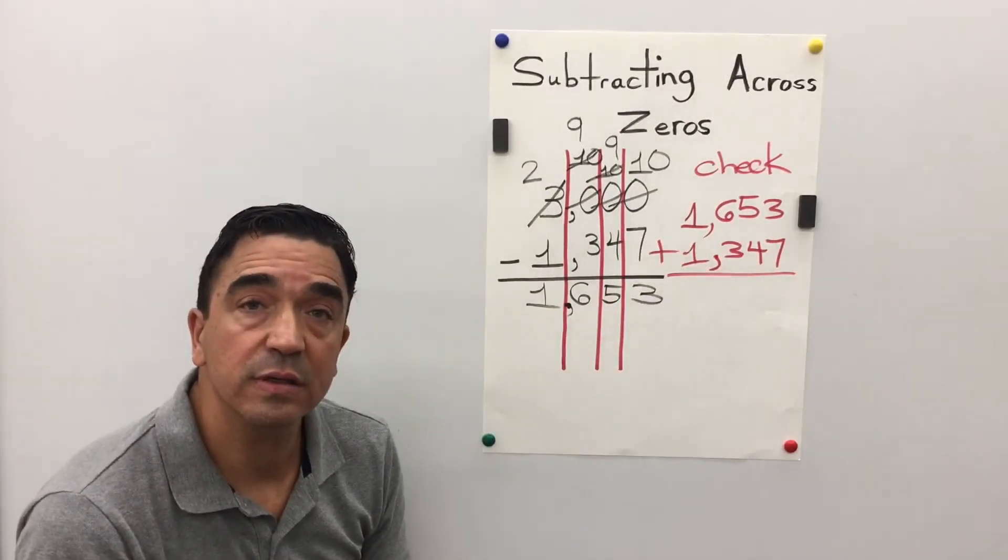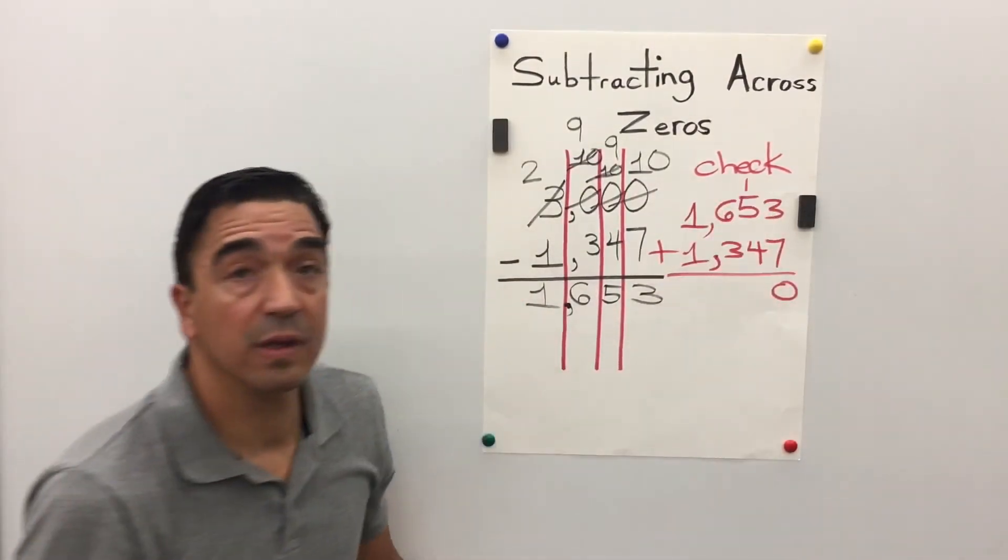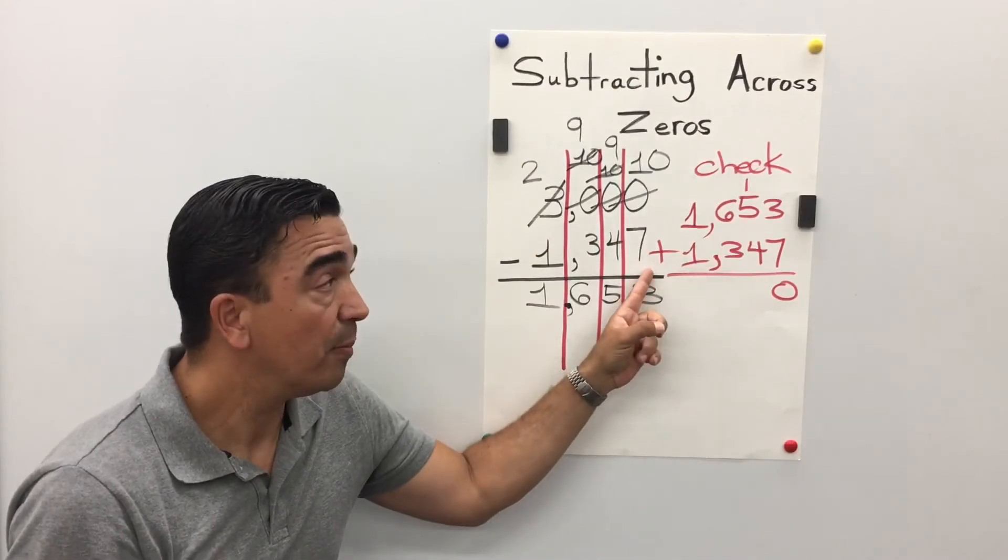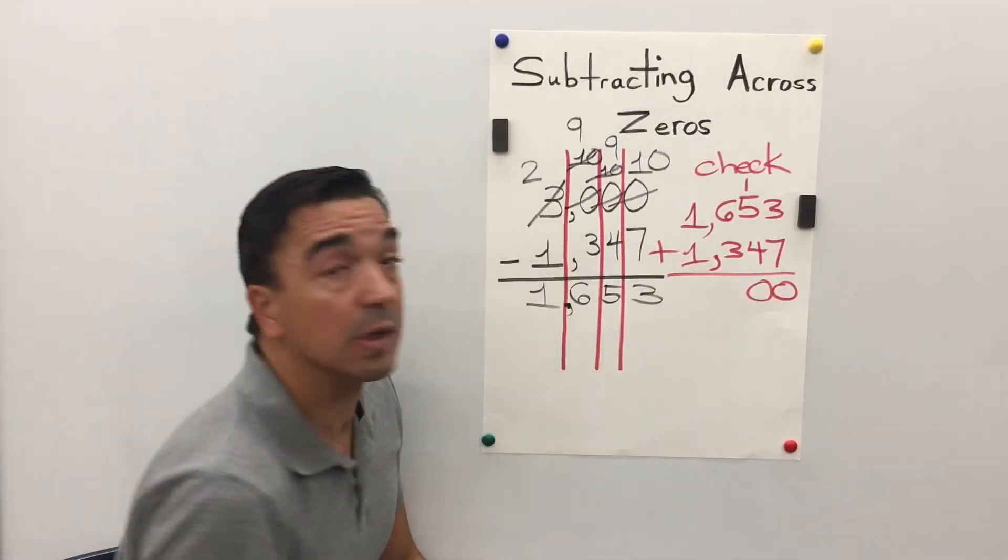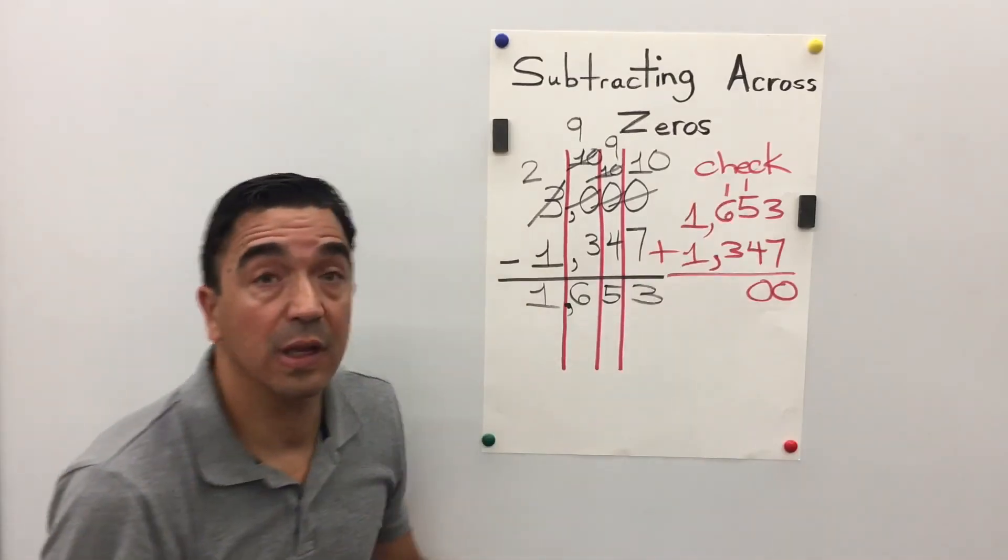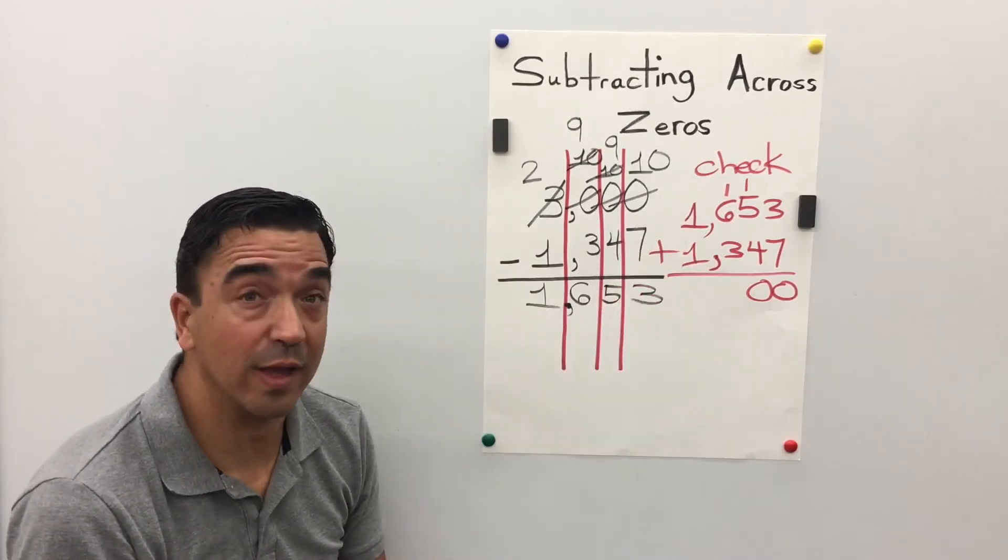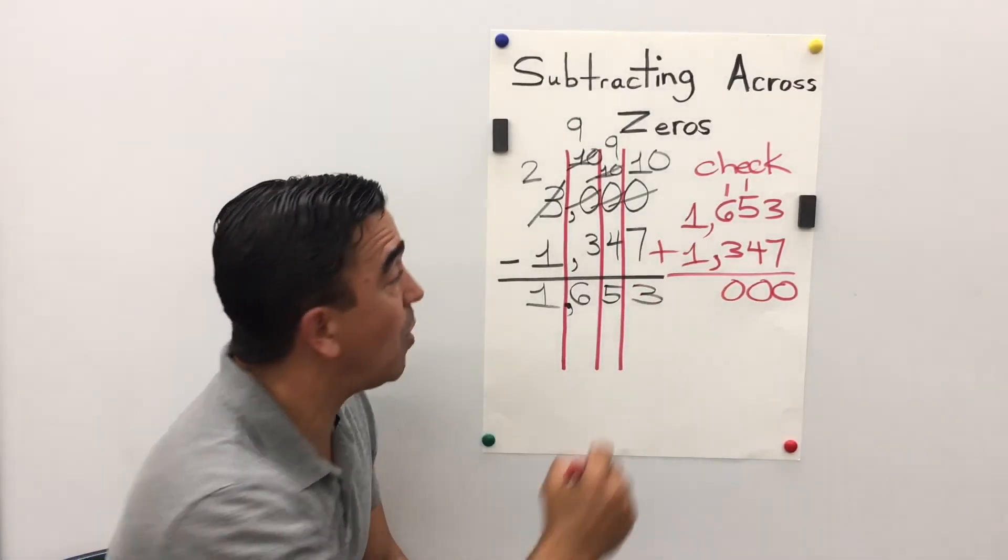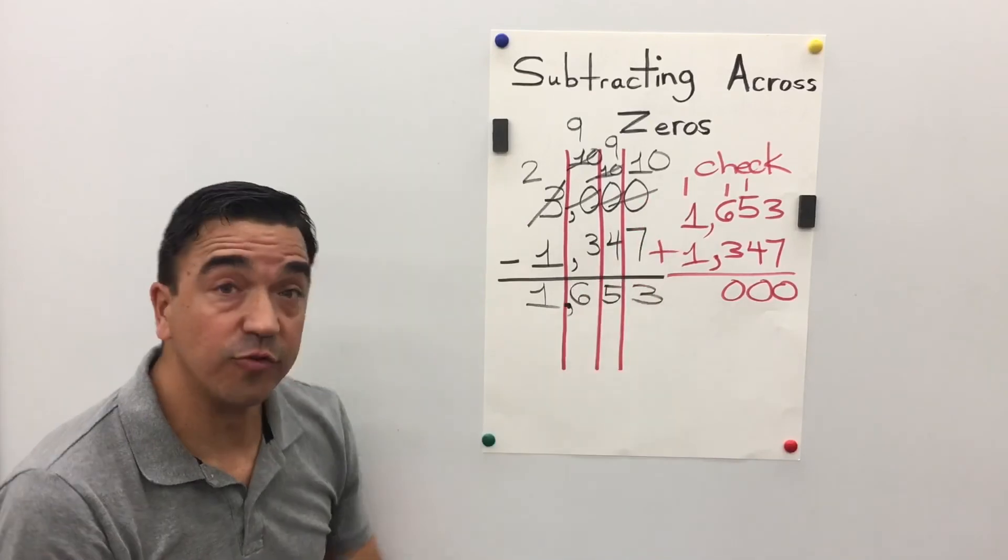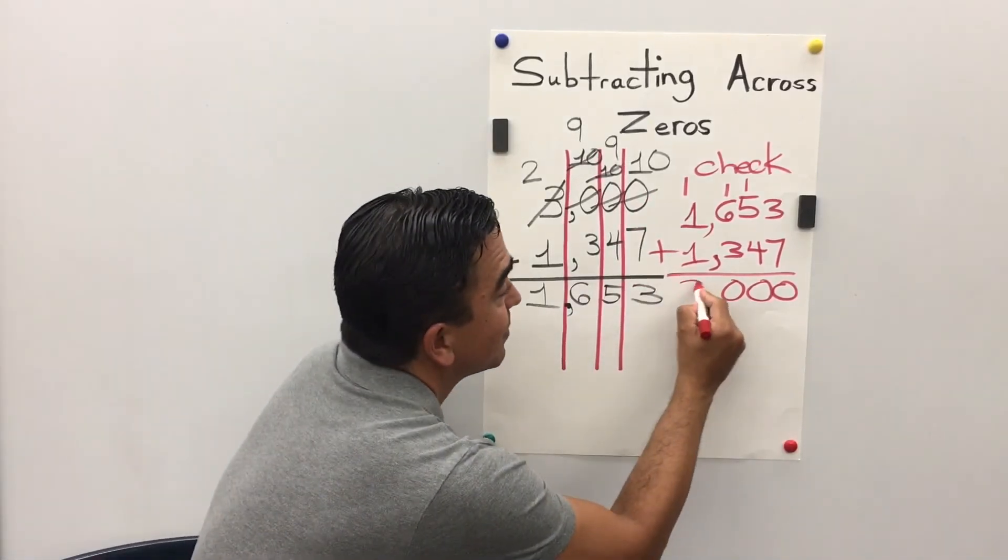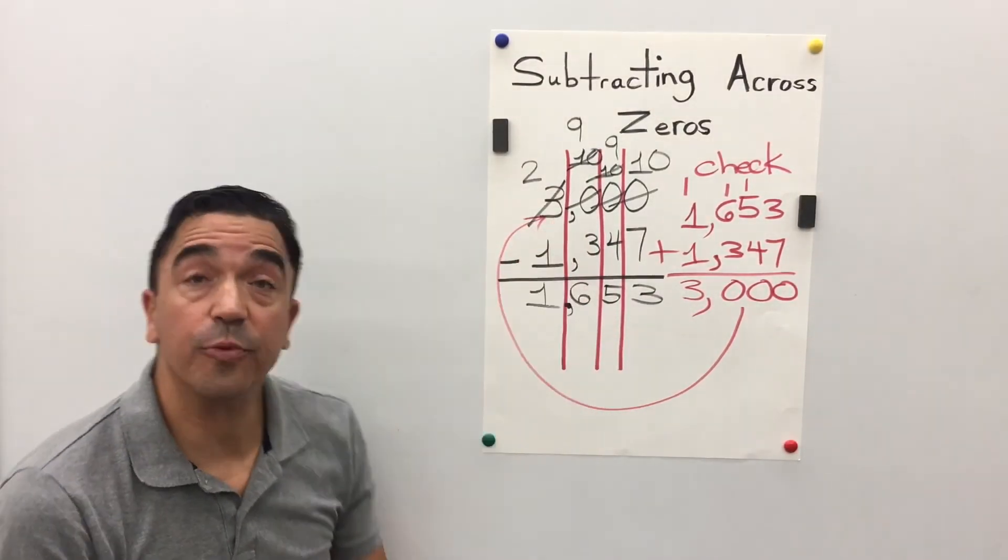3 plus 7 is 10. Regroup the 1. 5 plus 4 is 9 plus 1 is 10. Regroup the 1. 6 plus 3 is 9 plus 1 is 10. Regroup the 1. 1 plus 1 is 2 plus 1 is 3. And that is equal to 3,000.